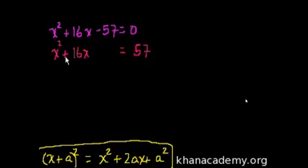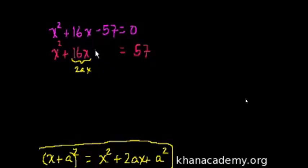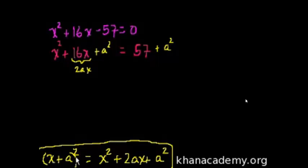Let me get rid of the 57 by adding 57 to both sides of this equation. So I get x squared plus 16x is equal to 57. Now, what could I add here so that the left-hand side becomes a square of some expression like x plus a? If you follow the pattern, we have x squared plus 2ax, so you could view 16x as 2ax, and then we need to add a squared. But we know that anything you do to one side of an equation, you have to do to the other, so we add a squared to both sides.